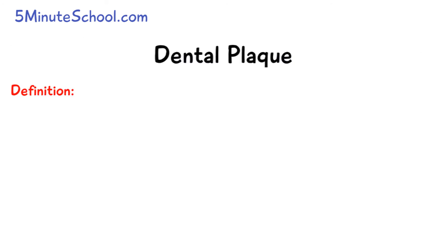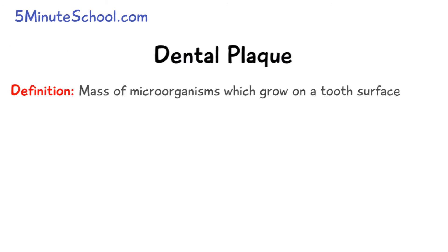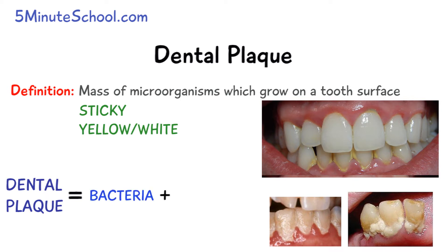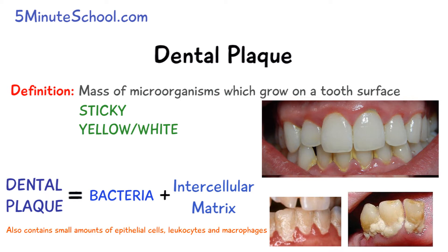In today's video we're going to be talking about dental plaque. Dental plaque is a mass of microorganisms which can grow on a tooth surface. It is a sticky yellow-white mass, and its components can be divided into bacteria and an intercellular matrix — the substance between the bacterial cells. It also contains very small amounts of epithelial cells, macrophages and leukocytes.